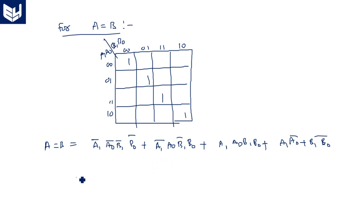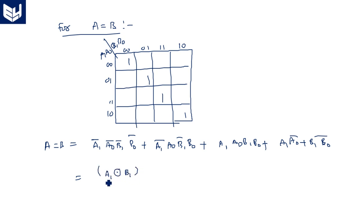If you simplify the A equal to B expression by factoring, you get it in XNOR format: (A1 XNOR B1) · (A0 XNOR B0). This is a cleaner representation that directly uses XNOR gates for comparison.